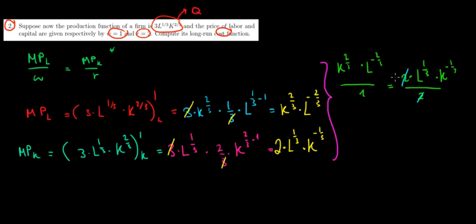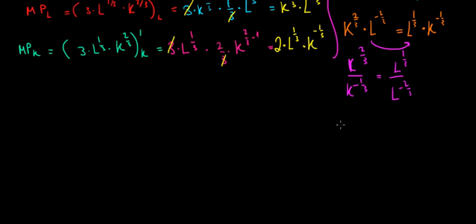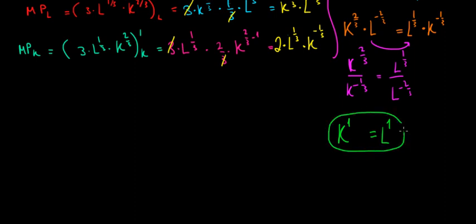Multiplying across, we get k^(2/3) * l^(-2/3) = l^(1/3) * k^(-1/3). Taking all k terms to one side and l terms to the other: k^(2/3) divided by k^(-1/3) equals l^(1/3) divided by l^(-2/3). Using exponent rules, the left side is k^(2/3 + 1/3) = k^1 = k, and the right side is l^(1/3 + 2/3) = l^1 = l. So we get k equals l.